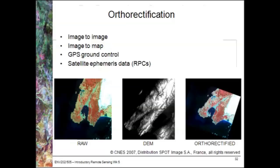Orthorectification is where we take an image and combine it with a digital elevation model and ground control data from a GPS or satellite ephemeris data, to give us information on exactly where the image was captured on the surface of the Earth and to remove any geometric distortions. The example here is a SPOT scene from Wellington. The raw data on the left-hand side is combined with satellite location data, a digital elevation model, and processed to give an orthorectified image with true coordinates for any location.